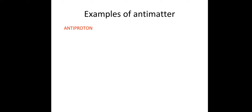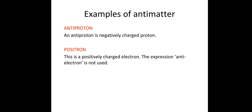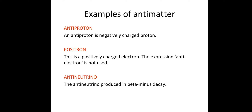So let's look at some examples of antimatter. An antiproton is basically a proton but negatively charged. A positron is a positively charged electron — we don't use the term antielectron; it has its own name, the positron. An antineutrino is exactly the same as a neutrino, and is produced in beta minus decay, which we looked at last lesson.